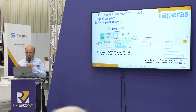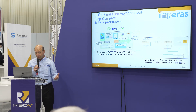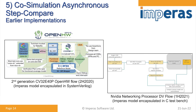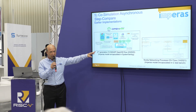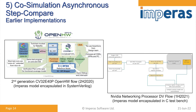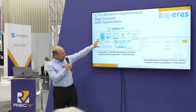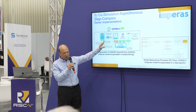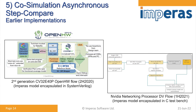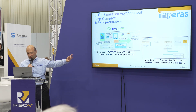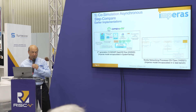Co-simulation asynchronous step-and-compare is actually a more comprehensive way to do DV. It enables verification of things like interrupts, multi-hart, or out-of-order pipeline—the more complex features in a processor. We've been working on DV for about three years now. These are a couple of early examples: one with Open Hardware Group and another with NVIDIA Networking—the Mellanox team. You can see all these different boxes, different colors, different people working on them, doing different things—not necessarily a fully cohesive environment, but we learned a lot from working with these people.